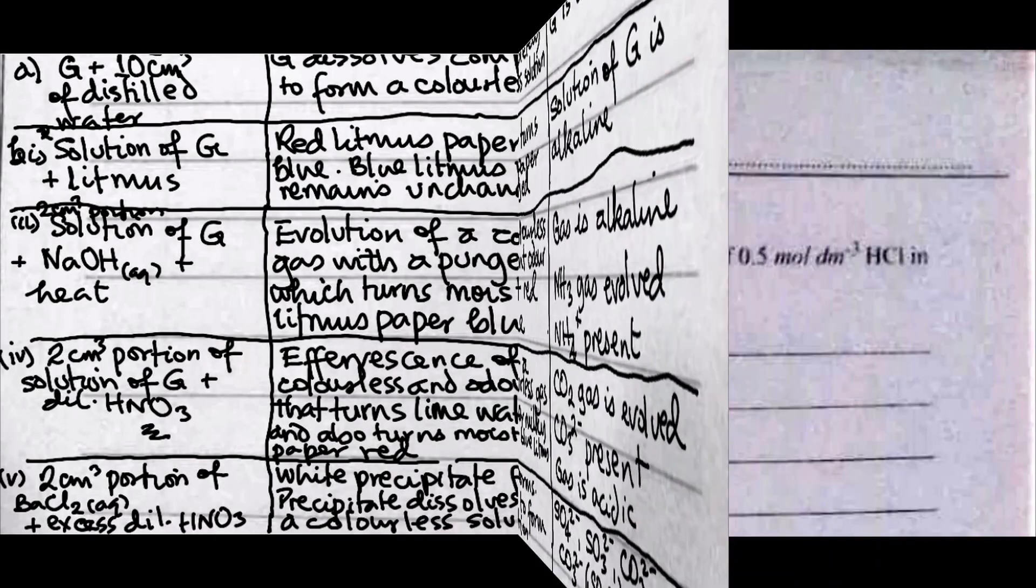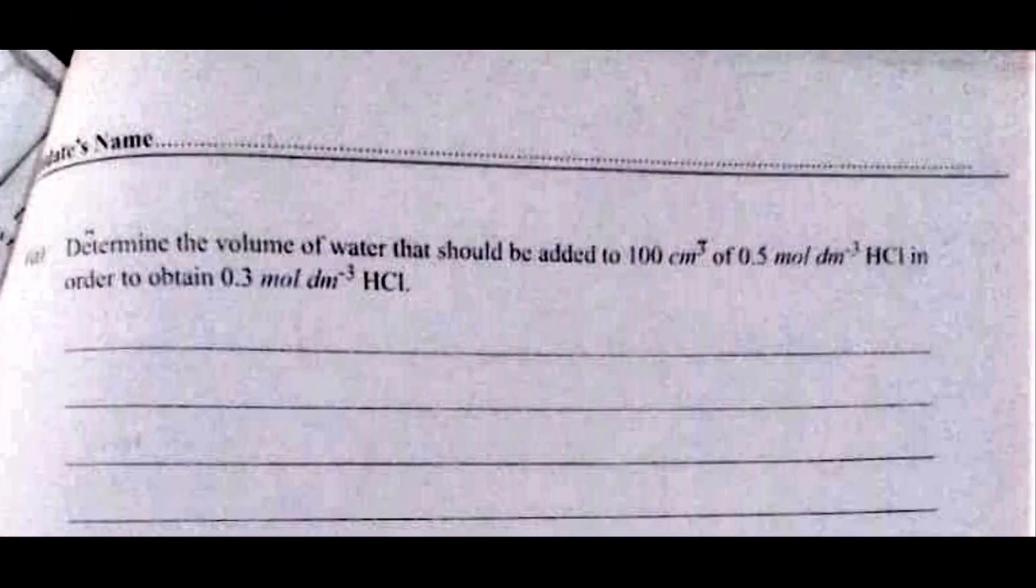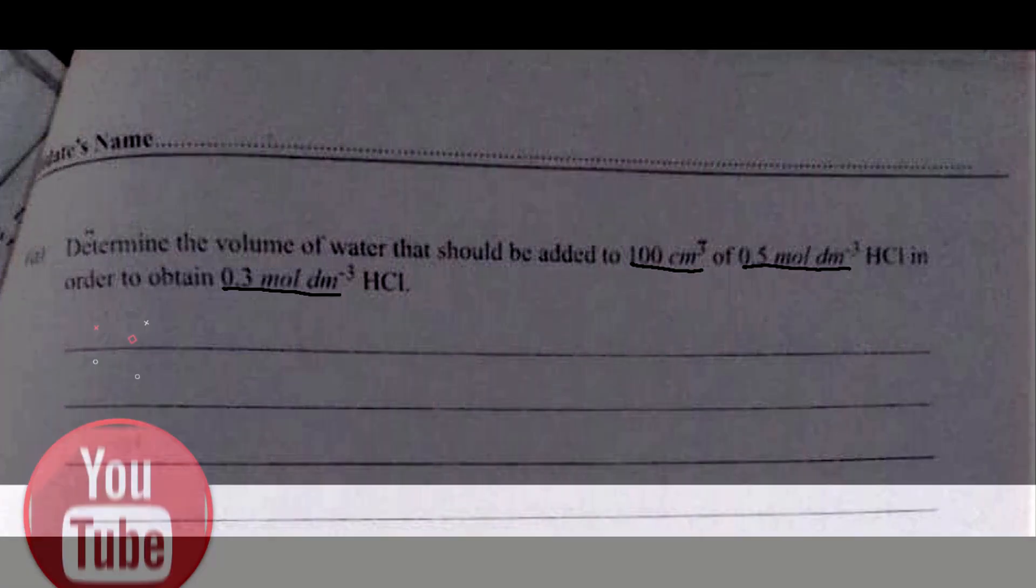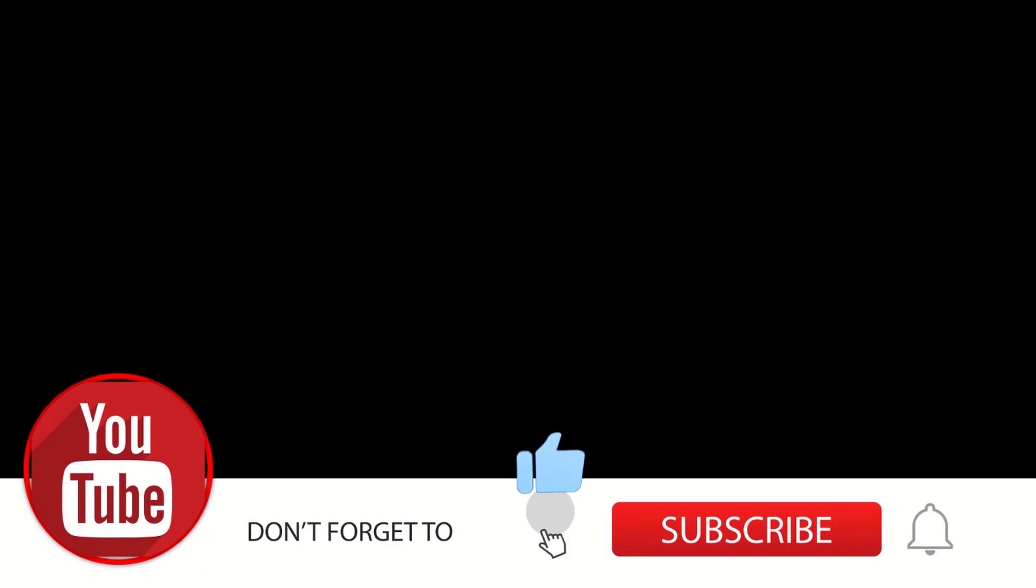Let's now look at question 3. Question 3a asks: Determine the volume of water that should be added to 100 cm³ of 0.5 mol per dm³ HCl in order to obtain 0.3 mol per dm³ HCl.